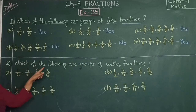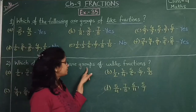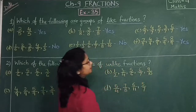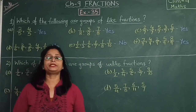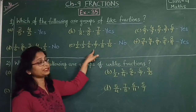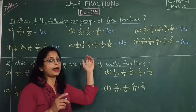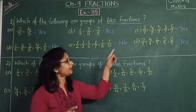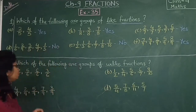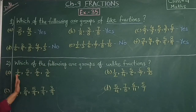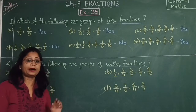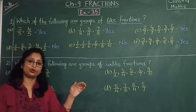Now see the next question: which of the following are groups of unlike fractions? Unlike fractions are those whose denominators are not the same. If the denominators are not the same, it is an unlike fraction. We have to check and say yes if it is unlike, no if it is not.